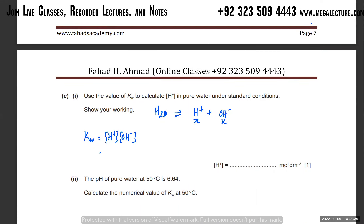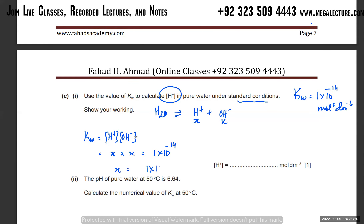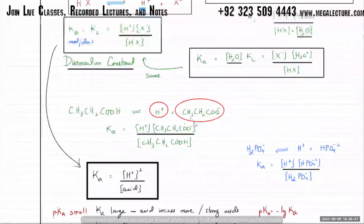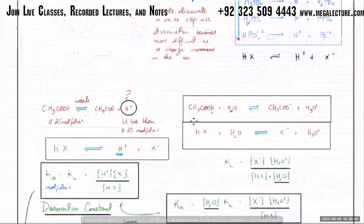Find [H⁺]: x² = 1 × 10⁻¹⁴, so x = √(1 × 10⁻¹⁴) = 1 × 10⁻⁷ mol dm⁻³. This is the H⁺ concentration in pure water under standard conditions.